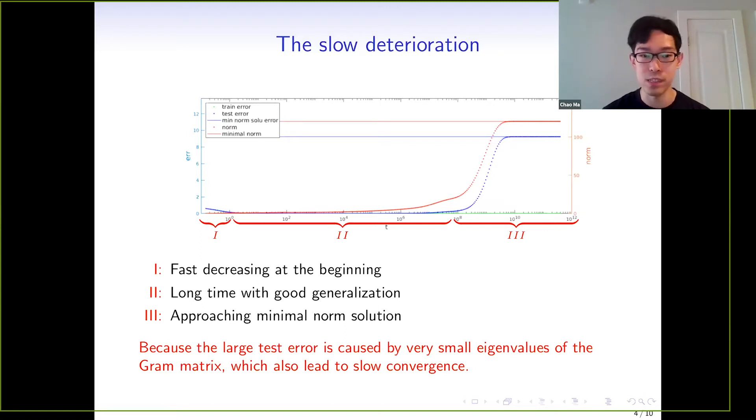As an intuitive explanation, we think that the slow deterioration is caused by the small eigenvalues of the Gram matrix, and the large test error is also caused by the small eigenvalues.